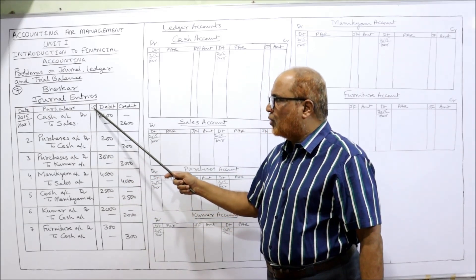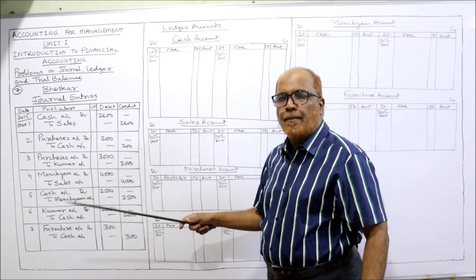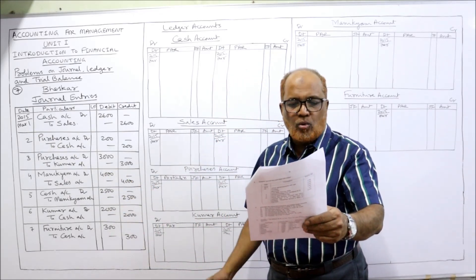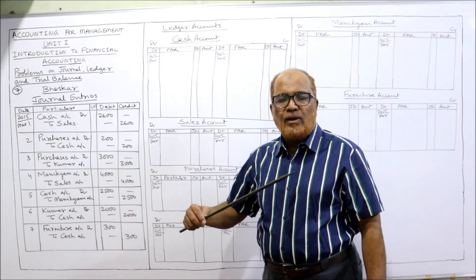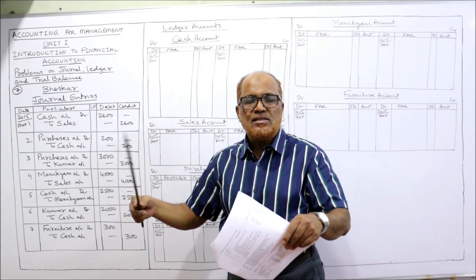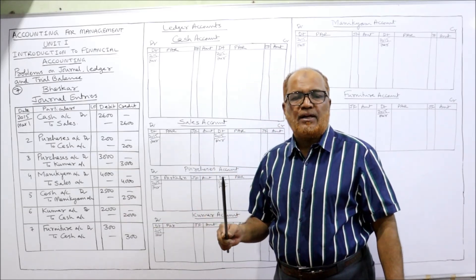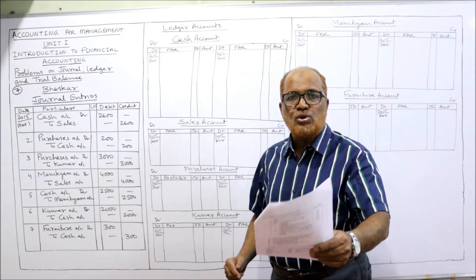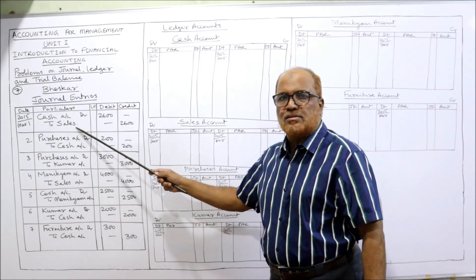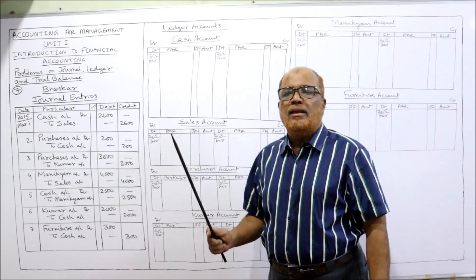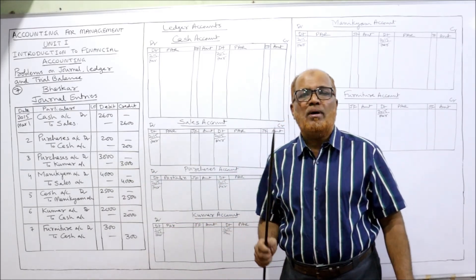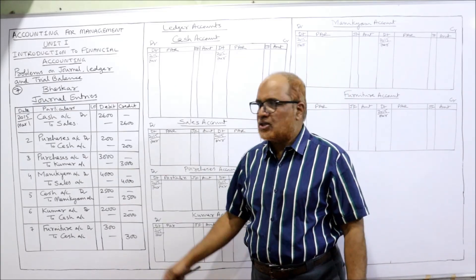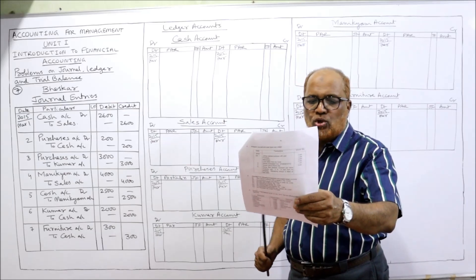The format is: date, particulars, LF (ledger folio), debit, credit. First transaction, 2015 March 1st — goods sold for cash. When goods are sold, cash is coming in, so cash account should be debited and sales account should be credited. Entry: Cash account Dr. to Sales — 2600. In the examination you must write the narration: 'being the goods sold for cash.'